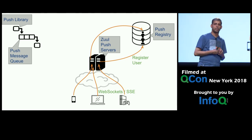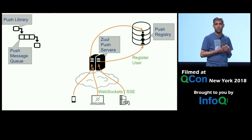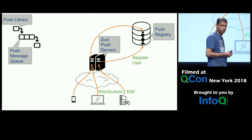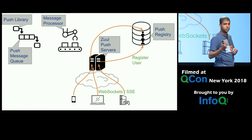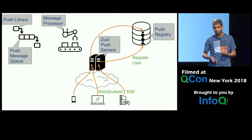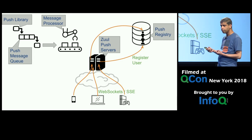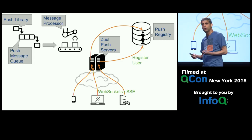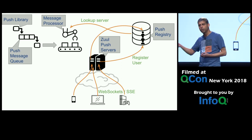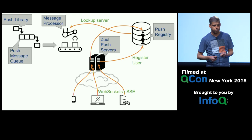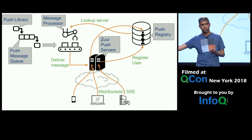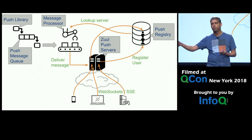The message queues also let us withstand wide variations in the number of incoming messages. They act as a buffer, absorbing big spikes of incoming push messages. Message processor is the component that ties all these other components together to do the actual push message delivery. It reads messages off the message queue. Each push message is addressed to a particular client by client ID or device ID. It then looks up that client in the push registry to figure out to which push server that client is connected. If it finds a push server for that client in the push registry, it will directly connect to that push server and hand over that push message to that server for sending it to that client.